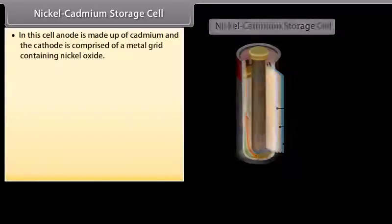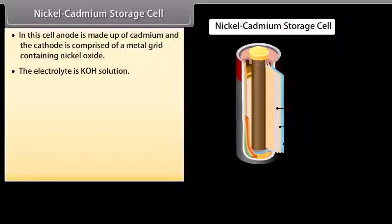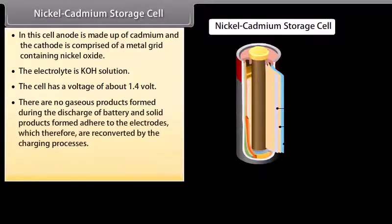Nickel cadmium storage cell: In this cell, anode is made up of cadmium and the cathode is comprised of a metal grid containing nickel oxide. The electrolyte is KOH solution. The cell has a voltage of about 1.4 volts. There are no gaseous products formed during the discharge of battery and solid products formed adhere to the electrodes which therefore are reconverted by the charging processes. These cells are extensively used in electronic watches and calculators.